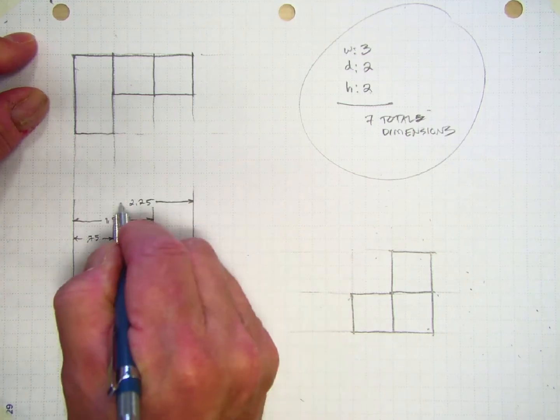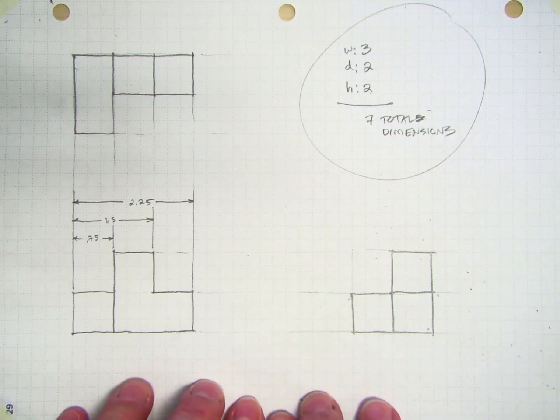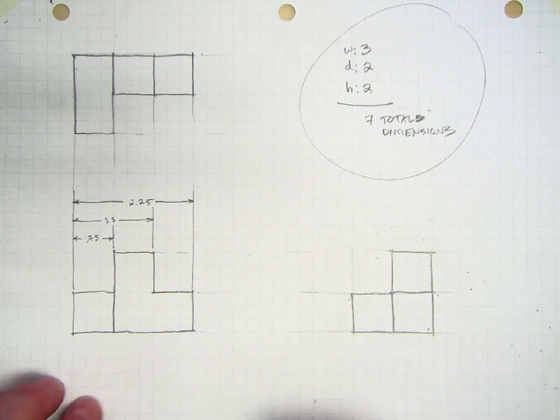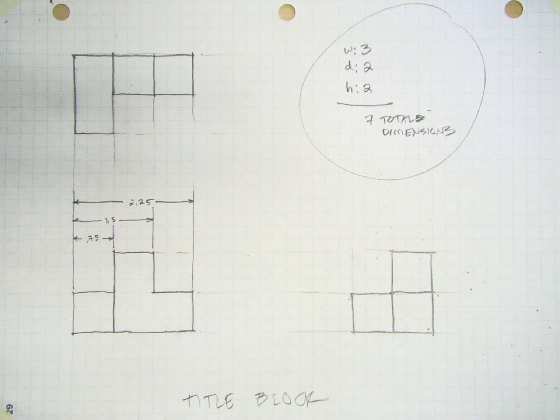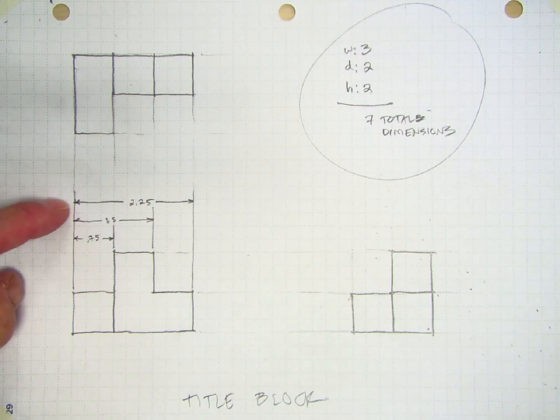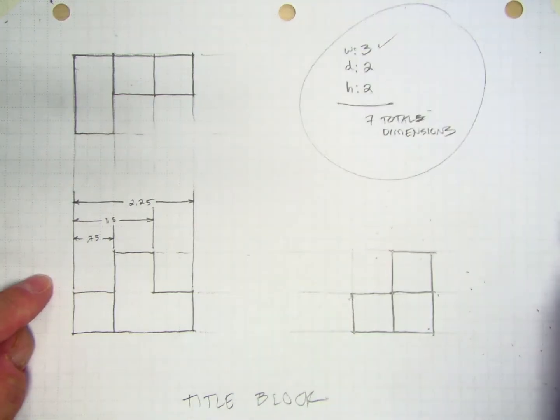Notice we don't put the units in there because the units will go down at the bottom of the page in the title block. Your title block will go down here. A lot of this will be automated when we do this in Autodesk Inventor. So there we go, one, two, three width dimensions. We're done with those.